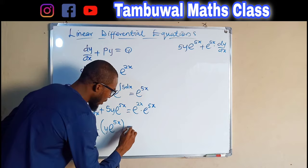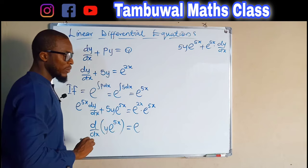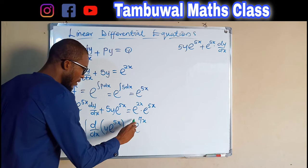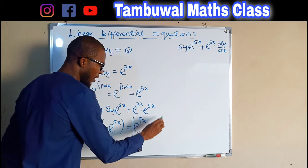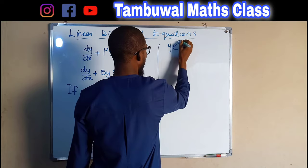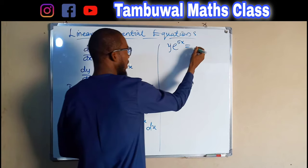On the right-hand side, using laws of indices, we take one base and add the powers together: 2 + 5 = 7, giving e^(7x). Now we can go ahead and integrate both sides with respect to x. Integrating the left-hand side leaves us with only y · e^(5x).